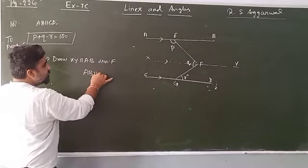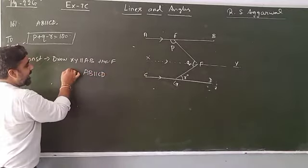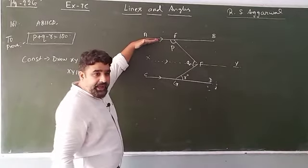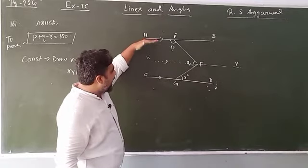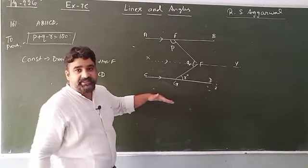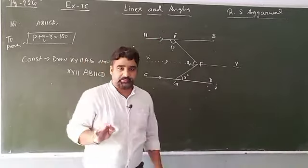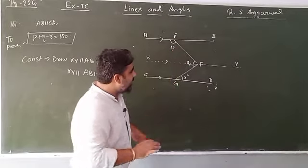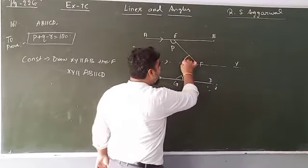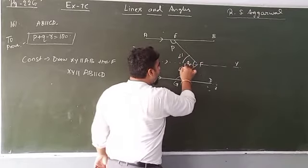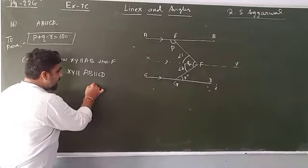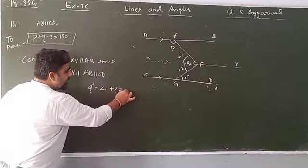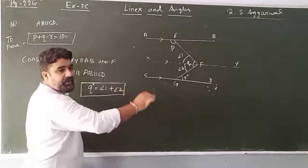Now AB, XY, and CD — these three lines are parallel to one another. Angle q can be broken into angle 1 plus angle 2. That is, q equals angle 1 plus angle 2. We will use this later.